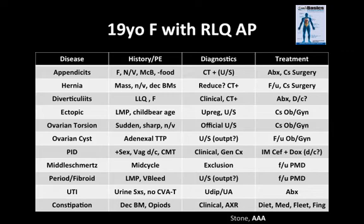Ectopic pregnancy should be the first thing you think of with any female with abdominal pain and syncope. Torsion, whether ovarian or testicular, is a time-sensitive emergency. Time is testicle. Look for sudden onset pain — and I mean sudden onset — and get an official ultrasound ASAP.